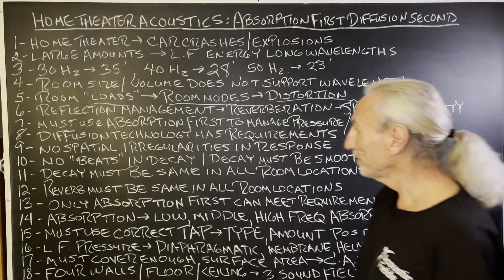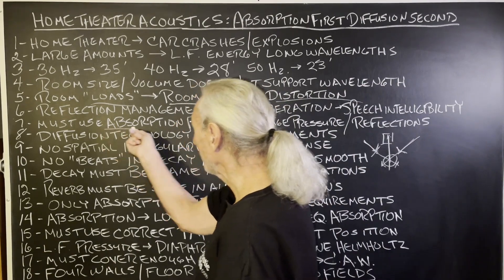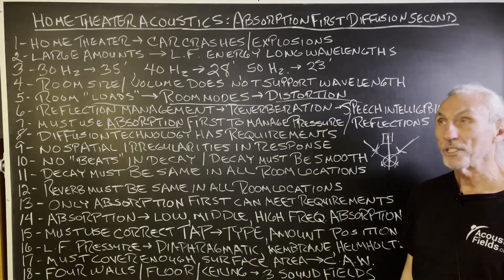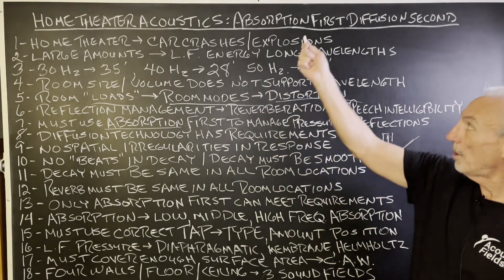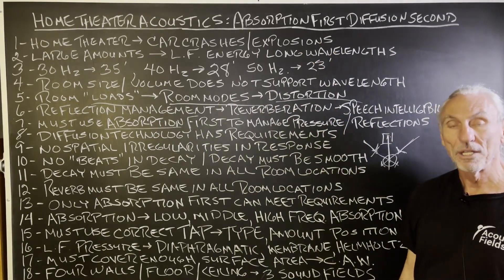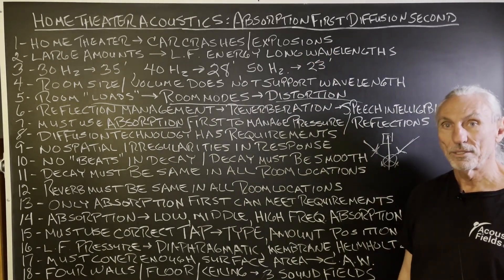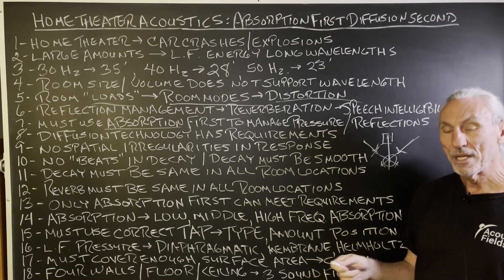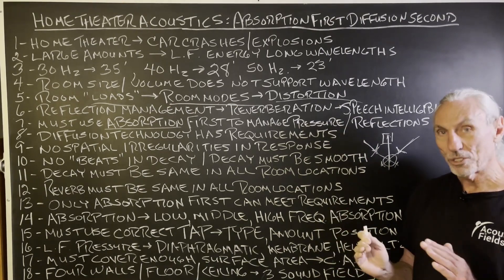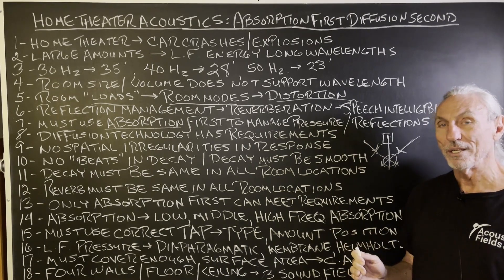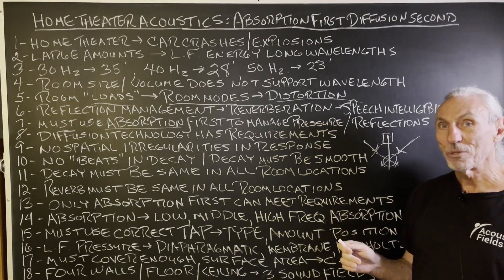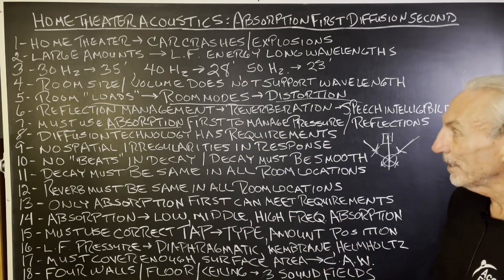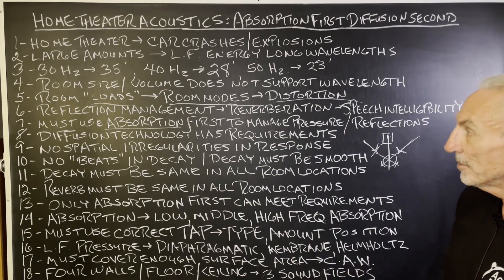We have to use absorption to manage all of these pressure and reflection issues. It's always absorption first when it comes to theaters. You've got to manage the pressure and the reflections and get them into a certain time window. That takes absorption, and that's a process we have to be very cognizant about before we're going to use diffusion.